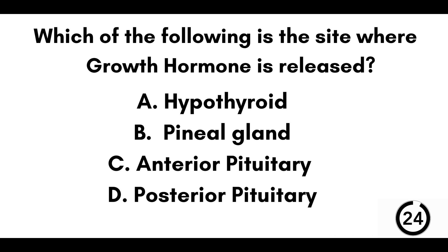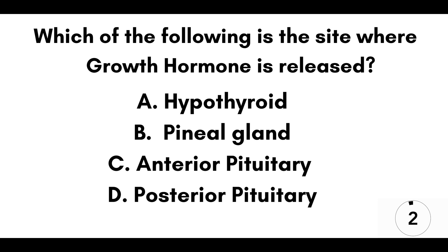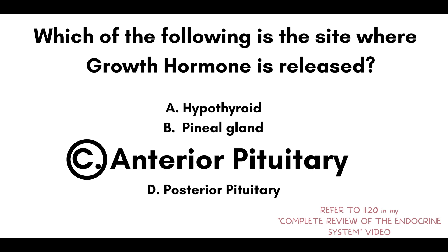Question number eight: which of the following is the site where growth hormone is released? A) Hypothyroid. B) Pineal gland. C) Anterior pituitary. Or D) Posterior pituitary. Our answer here is C, anterior pituitary.